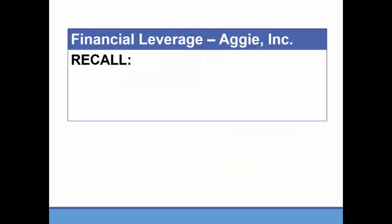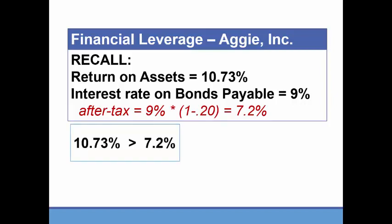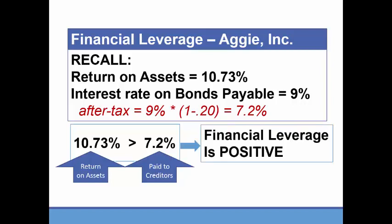For Aggie Inc., we computed the return on assets in the profitability ratios to be 10.73%. We also know from the additional information that the interest rate on bonds payable is 9%, which on an after-tax basis with a 20% tax rate comes out to 7.2%. Since the return on assets of 10.73% is greater than the after-tax cost of borrowing of 7.2%, we have positive financial leverage — we're earning more than it costs us to borrow.